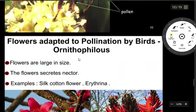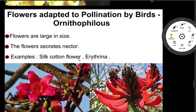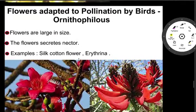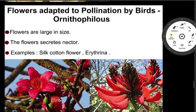Now we will discuss about flowers adapted to pollination by birds. Flowers are large in size and the flowers secrete nectar. An example is the silk cotton flower.